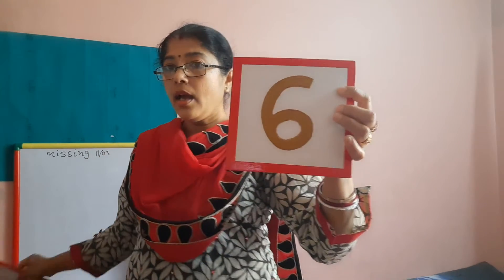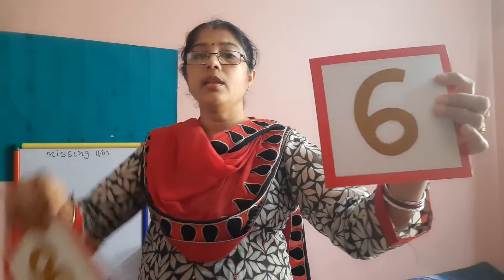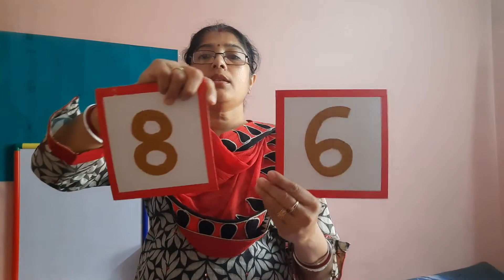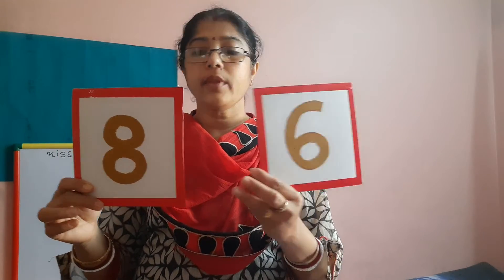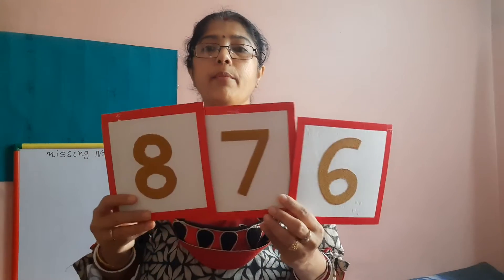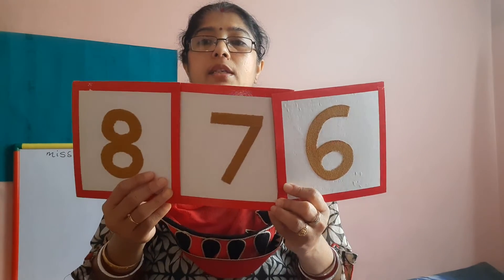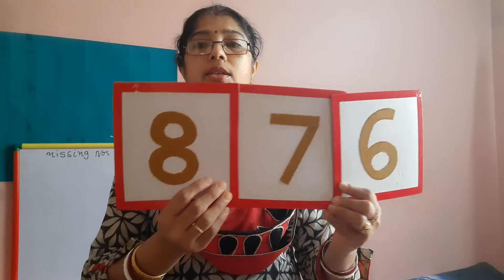Abhi dekho. Mere paas ye flashcards hai numbers ke. Ab hamne number 5 tak kiya. Now I will do number 6. And what comes after number 6? Number 8? Number 8 aata hai kya? After 6, does 8 come? No. Again there is a missing number. Now which number is going to come? Number 7. Number 7 will come after number 6. Ab sequence complete hua? 6, 7 and 8.